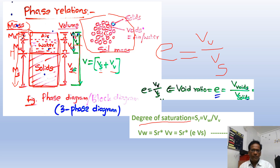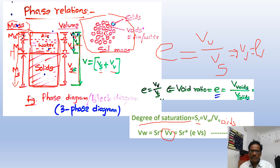Now let us move to degree of saturation, which is self-explanatory: within the voids, how much space is occupied by water. So Sr equals Vw divided by Vv. We can rewrite this as Vw equals Sr times Vv. Now Vv equals e times Vs, so substituting, Vw equals Sr times e times Vs. This is Equation 1.